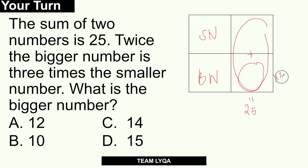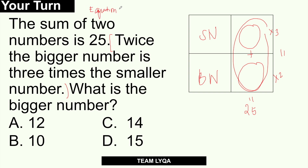The second problem: twice the bigger number equals three times the smaller number — that is, the bigger number times 2 equals the smaller number times 3. If you don't understand how I translated the sentence into that equation, watch my video on equation construction. It takes practice and familiarity to be really fast at that kind of analysis.